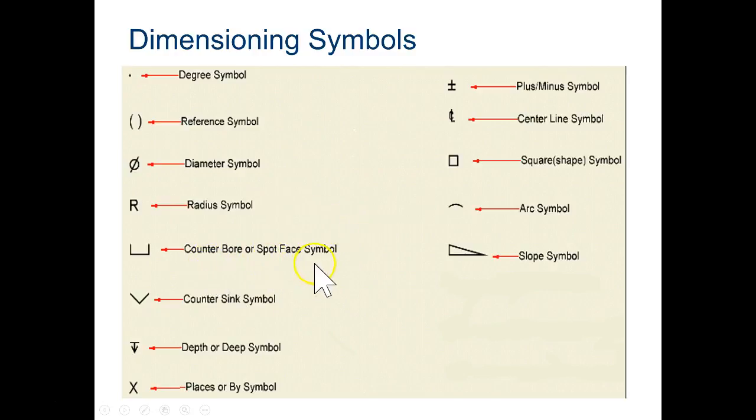This is the spot face symbol. What this means is if you drill a hole, it's going to be flat on the bottom. Countersink, that means that the hole will be tapered at the top or it will have a point at the bottom.